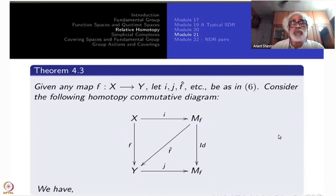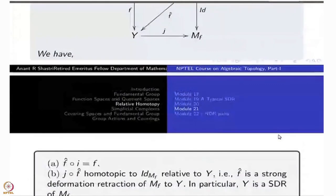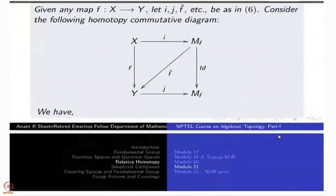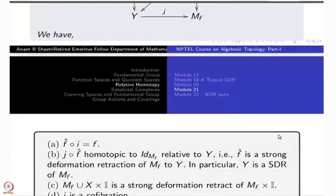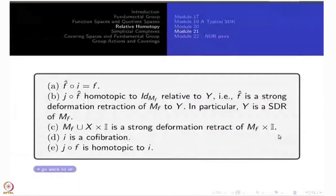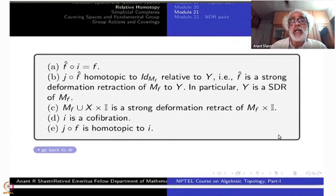This F-hat is actually an extension of F, because X is thought of as a subspace of MF. So F-hat composite I is F — that is, the top triangle is commutative. J composite F-hat, a map from MF to MF, is homotopic to the identity of MF. The bottom triangle is not a commutative triangle; it is homotopy commutative. J composite F-hat is homotopic to the identity, and this homotopy is relative to Y — that is, F-hat is a strong deformation retraction of MF to Y.